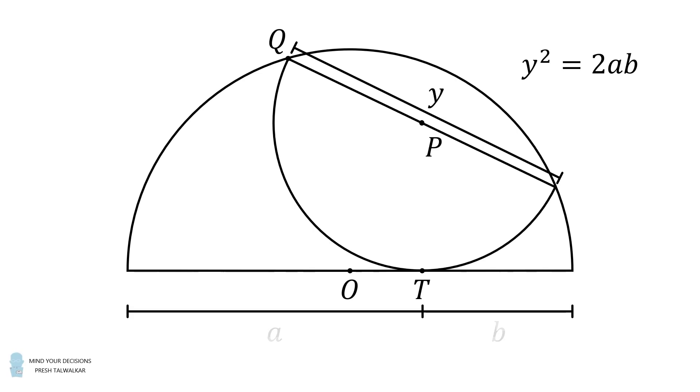Now let's tackle part 1. We have the two distances of a is equal to 2, and b is equal to 1. So we substitute y squared is equal to 2 times 2 times 1. This means y squared is equal to 4, and y is equal to 2. That's part 1 of the question.